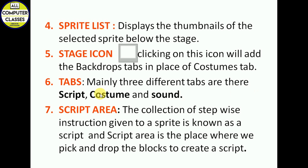There are mainly three tabs: Script, Costume, and Sound. Script provides all block options for writing scripts. Costume lets us choose costumes for the sprite. Sound lets us add sound to our animation. The Script Area is the collection of stepwise instructions given to a sprite — like a program, it is a set of instructions — and it is written by picking and dropping blocks in the script area.